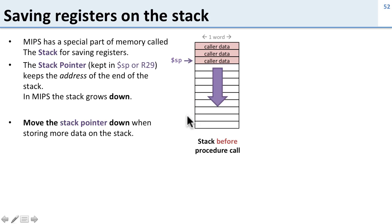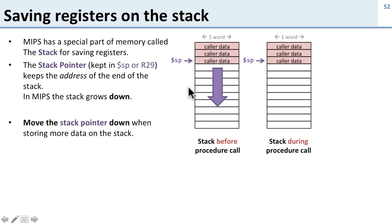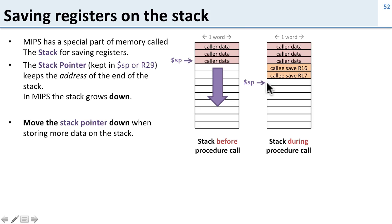Here's our stack and stack pointer before a procedure call. Now we're going to call the procedure, so we move the stack pointer down and save some data onto the stack. We move it down again and save some other data, and move it down again and save some other data. So here, for example, the callee has decided to save three registers on the stack — it moves the stack pointer down three words and stores those three registers to the stack.